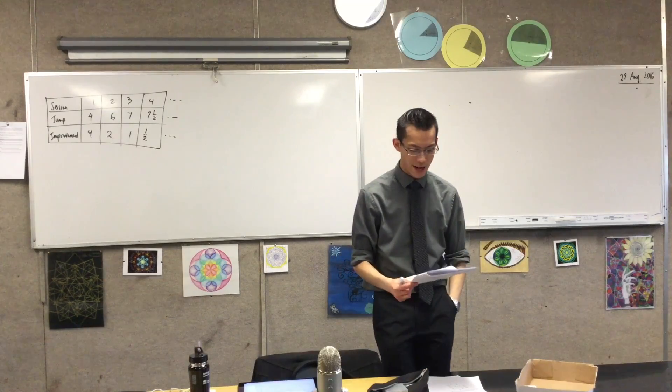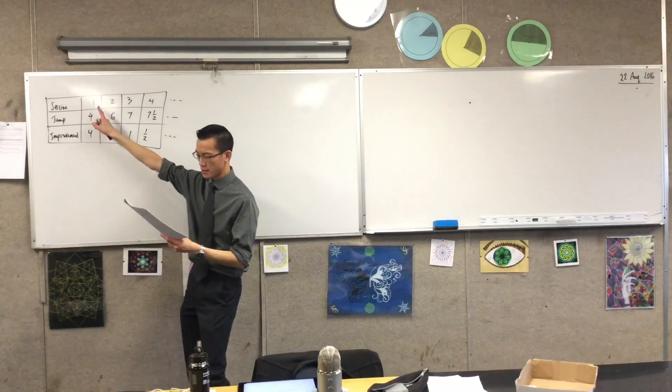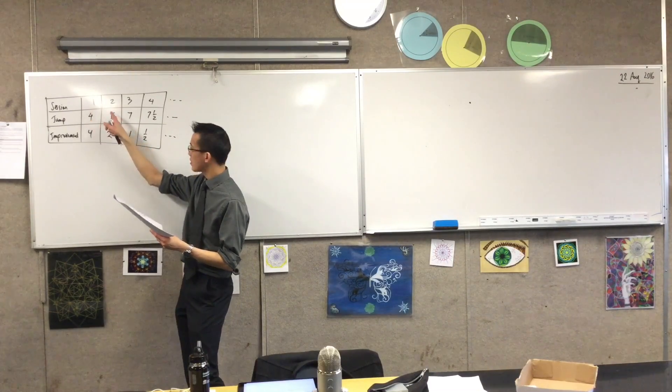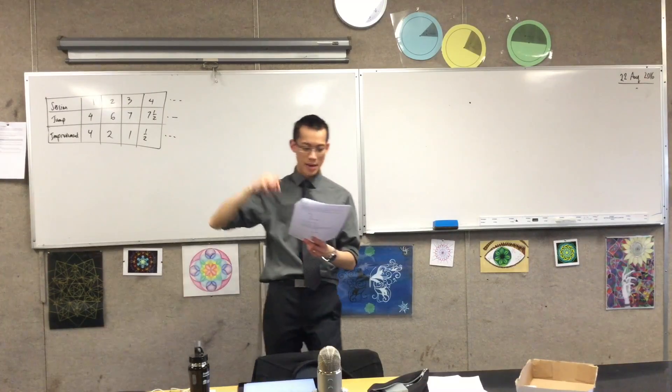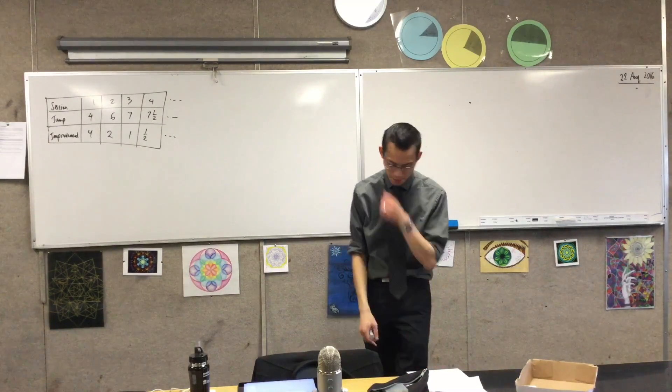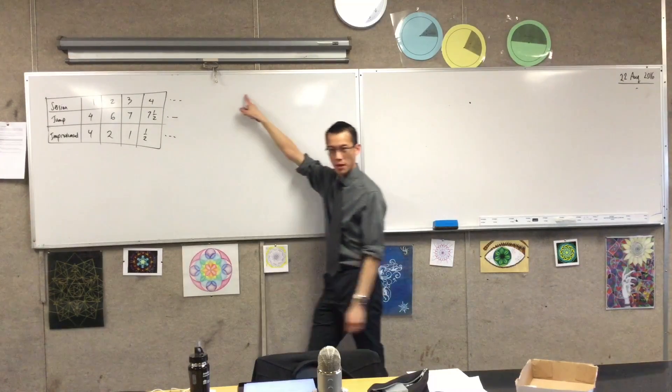A long jumper returning to training begins at his first session with a jump of 4 meters. Then at the next session he jumps 6 meters and he continues to improve according to this table. Part 1 just asks us to extend this pattern, what's going to happen at jump number 10.